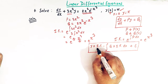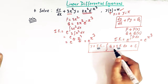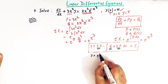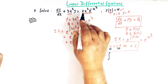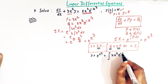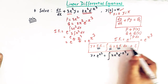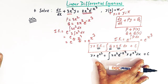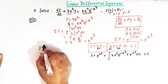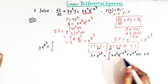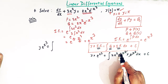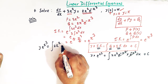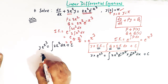Substituting the integrating factor and Q: y · e^(x³) = ∫ 2x² e^(−x³) · e^(x³) dx + c. The e^(−x³) and e^(x³) cancel, so we are left with ∫ 2x² dx + c.